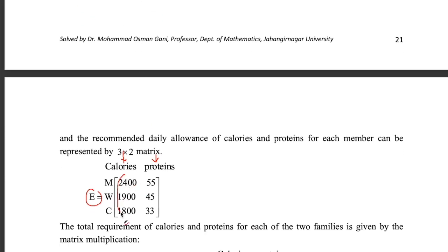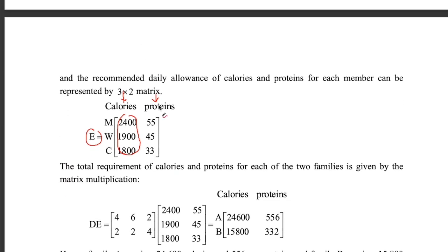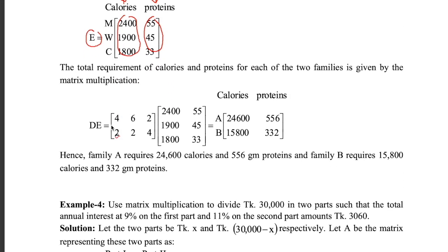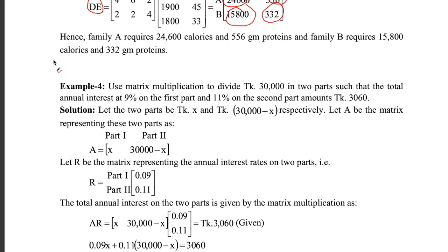Multiply this row and this column to get the total calories in family A, and to get the total proteins in family B multiply the corresponding row and column. The result of the product D×E will give us the total calories in families A and B and the total proteins in families A and B — which is exactly what we need to calculate in this example.